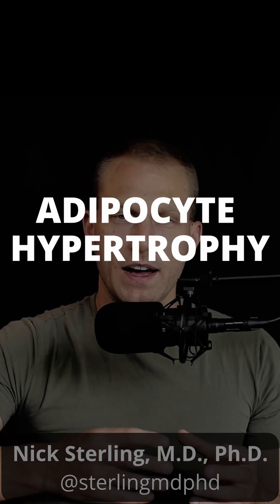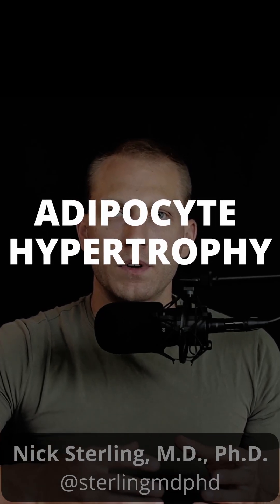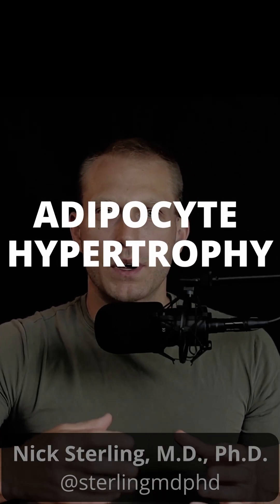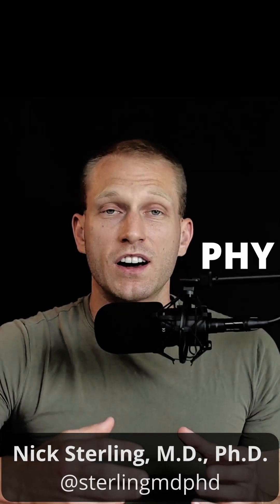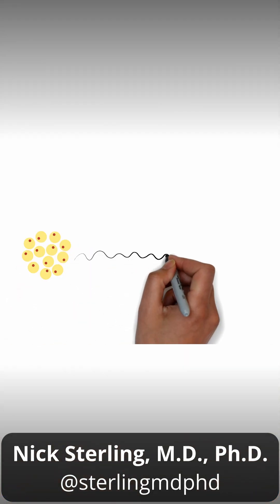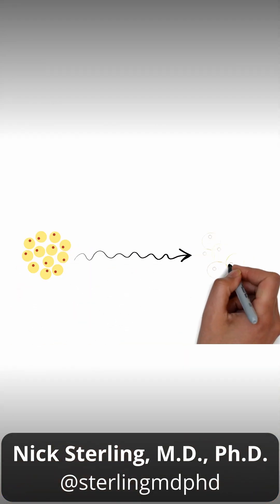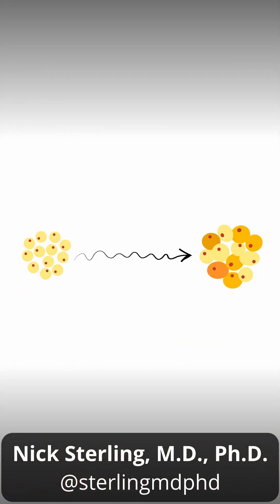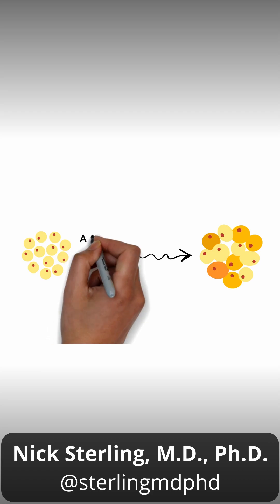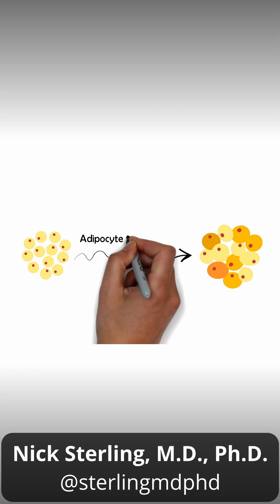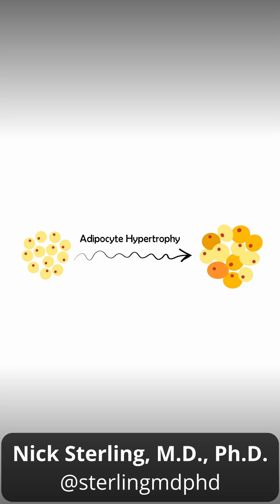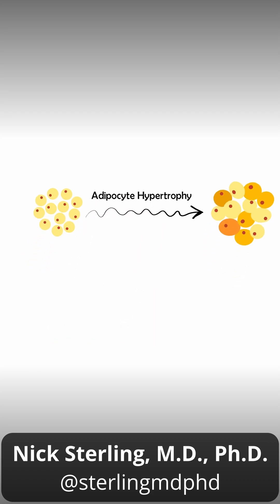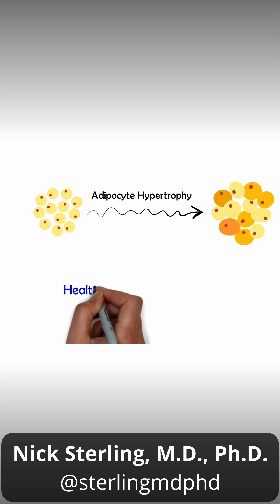This is where your fat cells become bigger and bigger — up to even a hundred, or in some cases a thousand times their smallest size. And because of this, it places a lot of tension on the cell surface, the membrane.